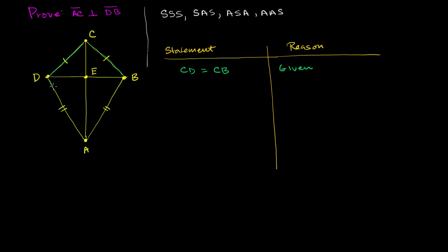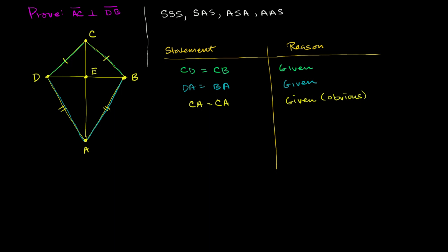Statement 2: DA equals BA — the length of segment DA is the same as the length of segment BA. That's also given in the diagram. Statement 3: CA equals CA — it's obviously in both triangles, shared side. So both triangles share that side. Statement 4: triangle CDA is congruent to triangle CBA, by the side-side-side postulate and statements 1, 2, and 3.